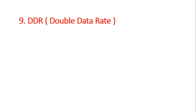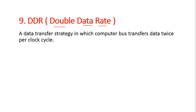Next is DDR — Double Data Rate. SDR stands for Single Data Rate, while DDR stands for Double Data Rate. DDR is a data transfer strategy in which the computer performs burst transfers, transferring data twice per clock cycle, allowing double data transfer compared to SDR.